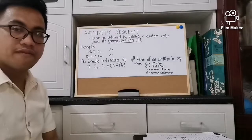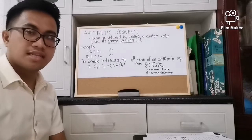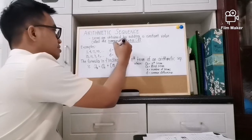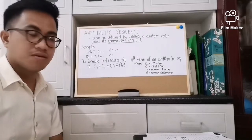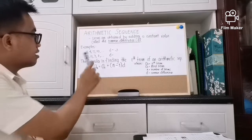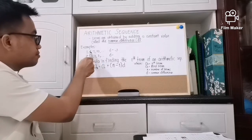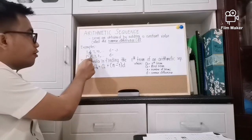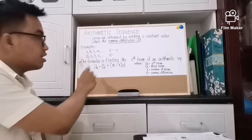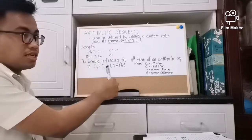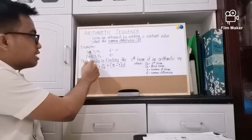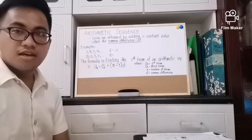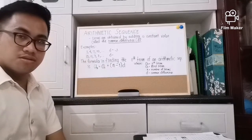The first example: 1, 4, 7, 10, and so on is an example of arithmetic sequence because it has a common difference which is 3. How did we get 3? We just subtract the second term from the first term — 4 minus 1 is equal to 3. You can also check with other terms: subtract the third term from the second term — 7 minus 4 is equal to 3, and so on.